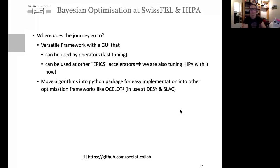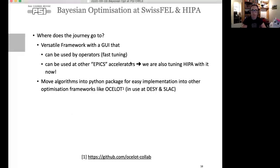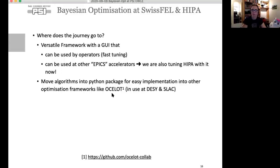Where does the journey go with Bayesian optimization? We have a versatile framework and are finalizing it as a tool operators can start and use themselves. It can be used at other EPICS-based accelerators, and we would like to move the algorithms into a Python package so they can be implemented in other optimization frameworks such as Ocelot, used at DESY and SLAC.